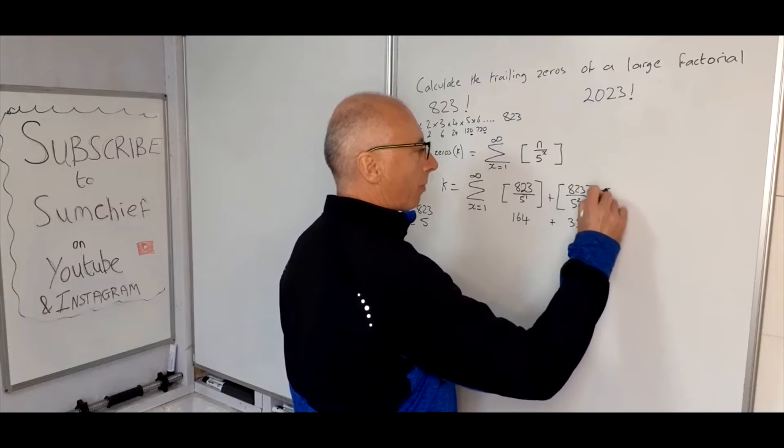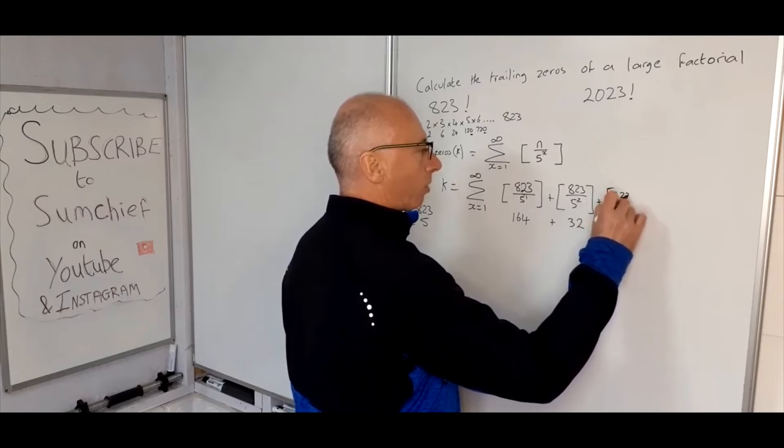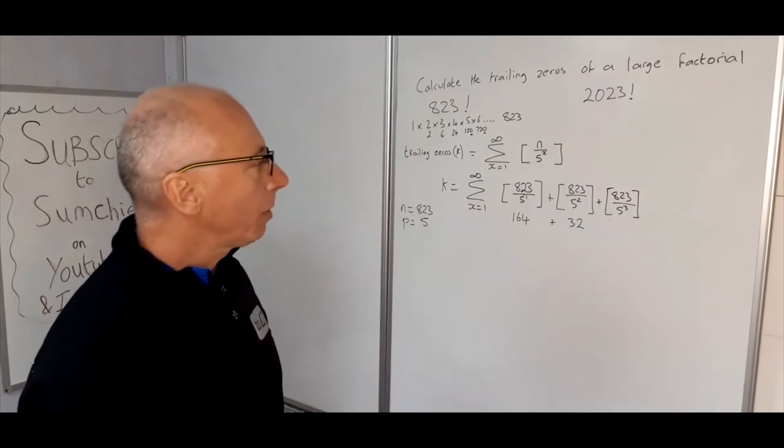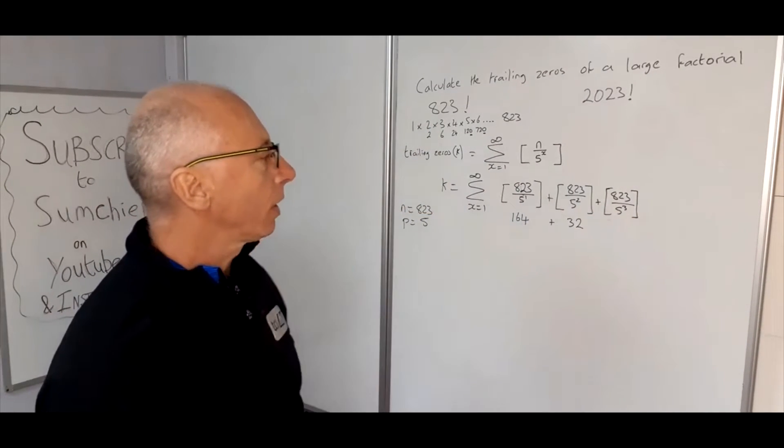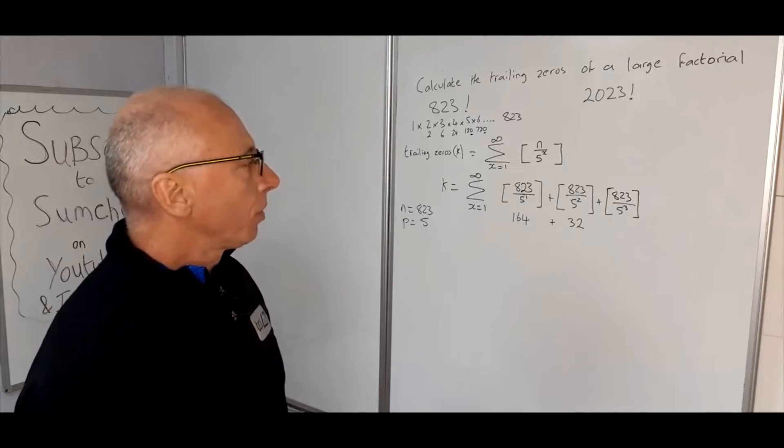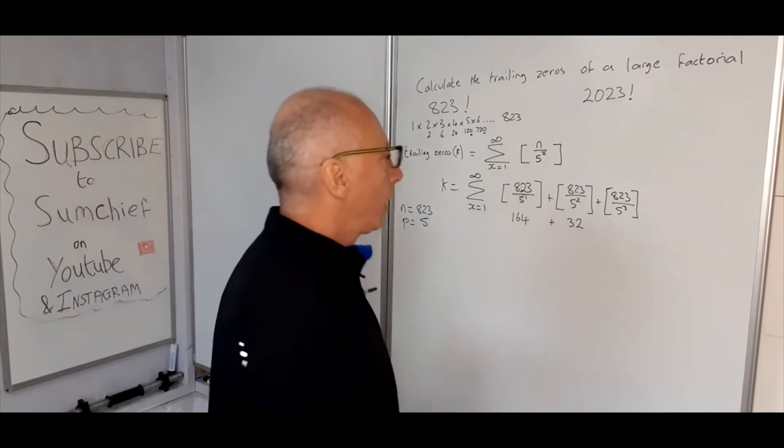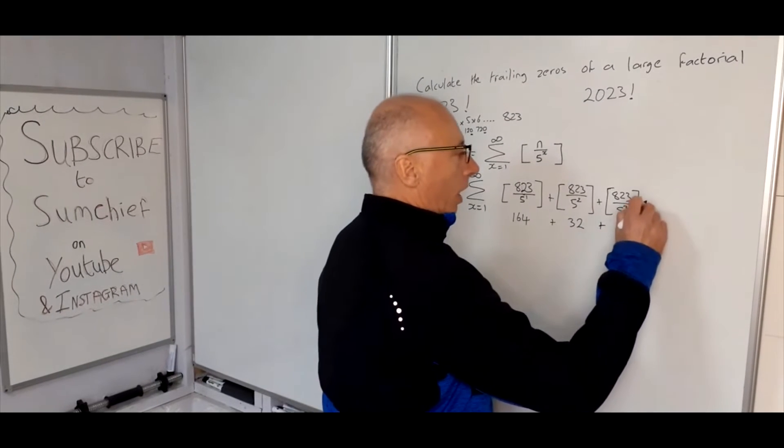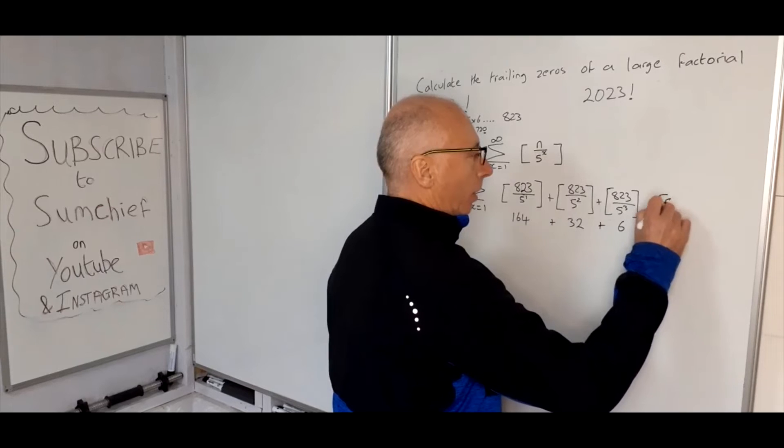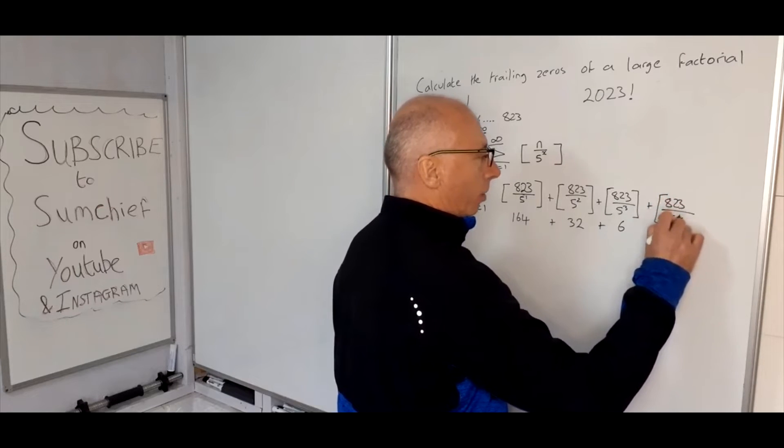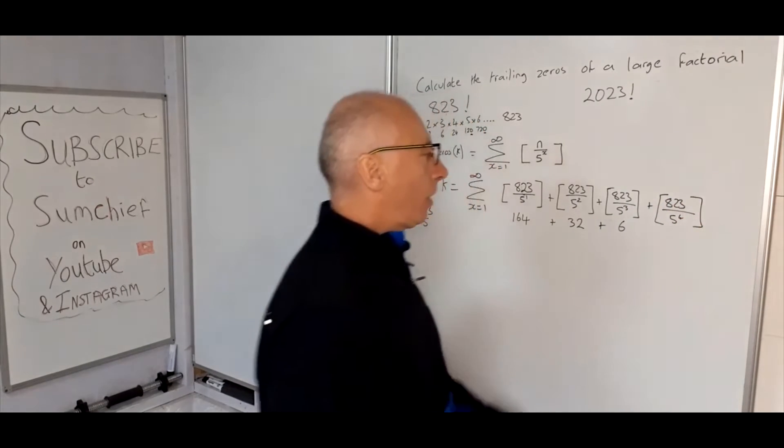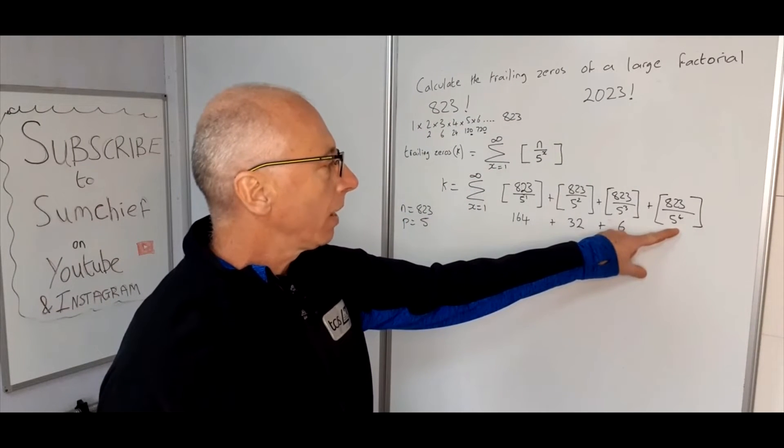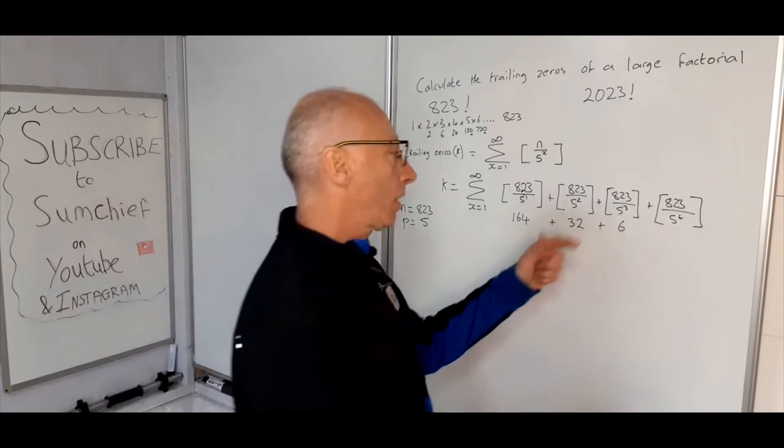Okay, so down to the next one. 823 by 5 cubed, so that's 125. So how many 125s in 823? Well, 4 would make 500, 6 would make 750, so that's going to be 6. And then on to the next one. 5 to the power of 4, that's 5 times 5 is 25, square that is 625. So that's just going to give us 1.